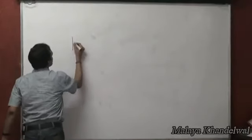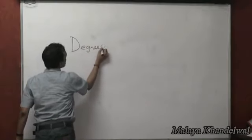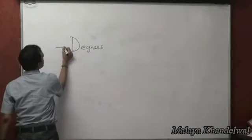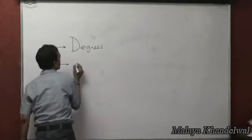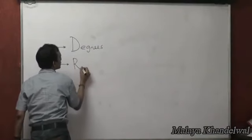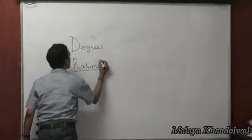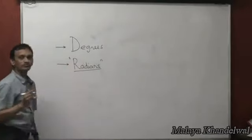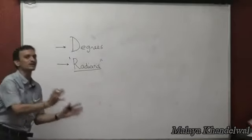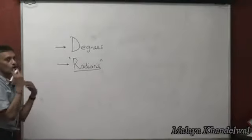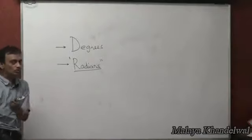We would look at the angle not always in degrees but also in radians. The new unit of measurement of an angle is radians. What we have learnt so far is degrees — that is the old measurement. The new unit is radians. How do we migrate from degrees to radians and vice versa?